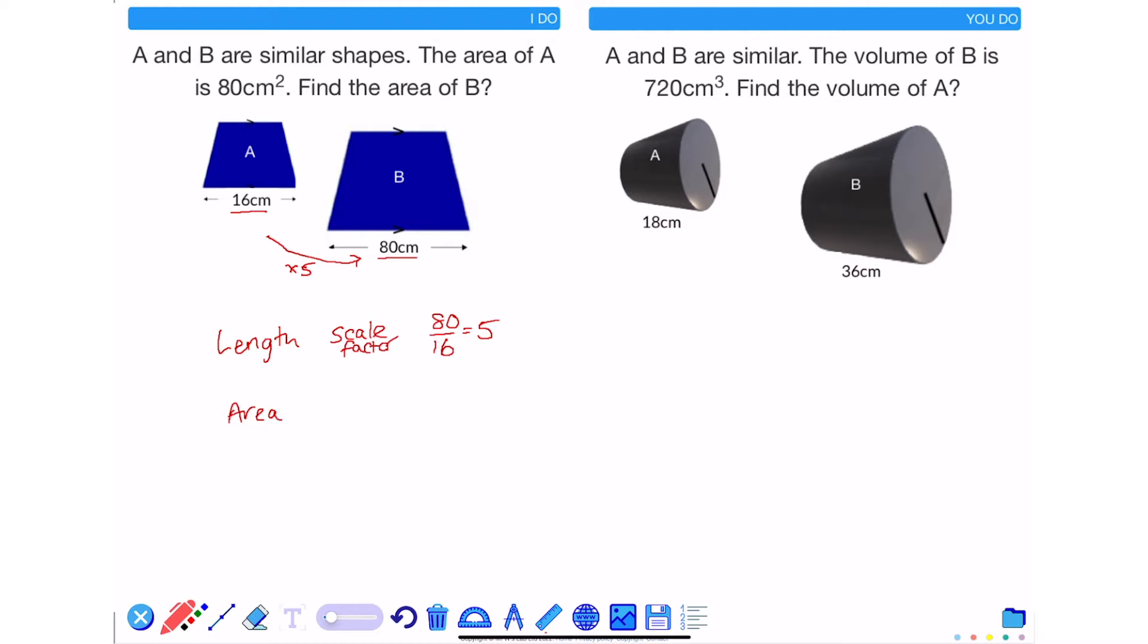With the area of these two shapes, it also has a scale factor, but the scale factor is squared. So the area scale factor is 25, which is 5 squared. The scale factor between the two corresponding lengths being squared.